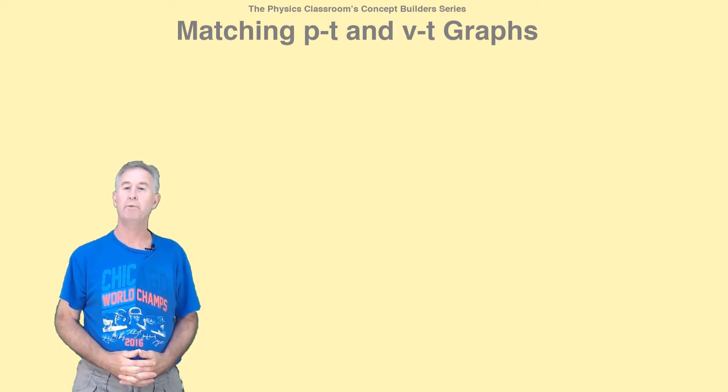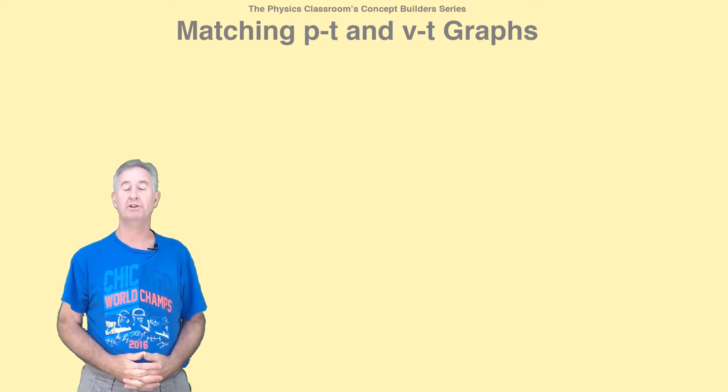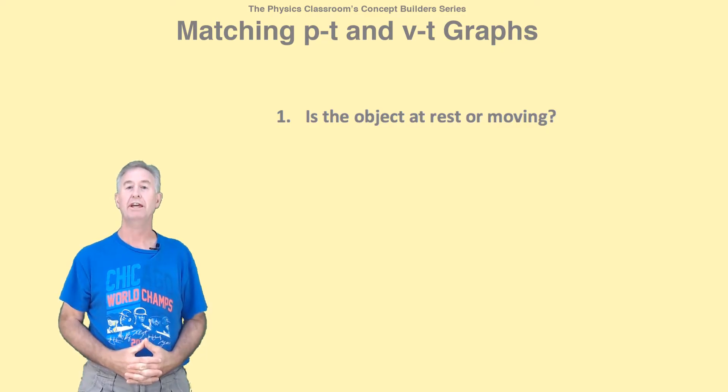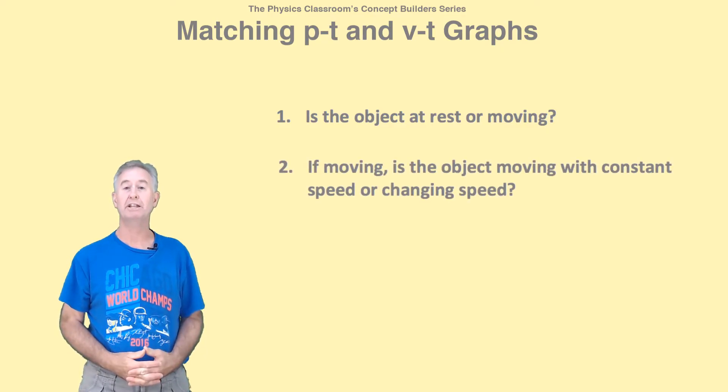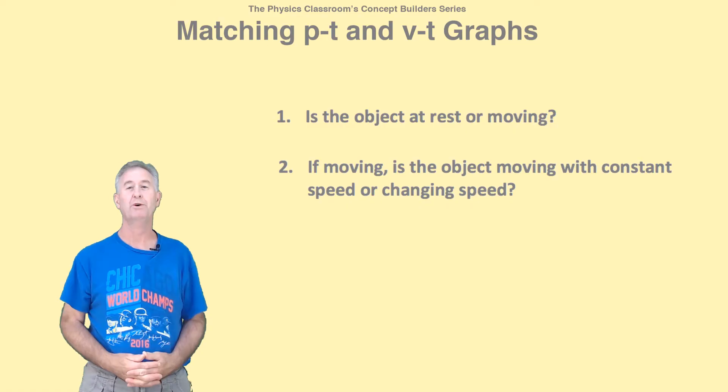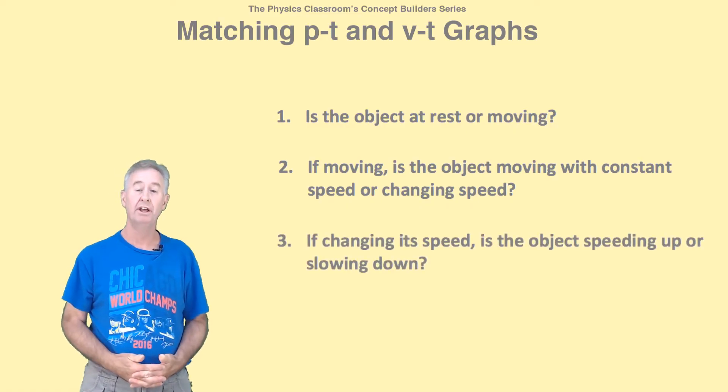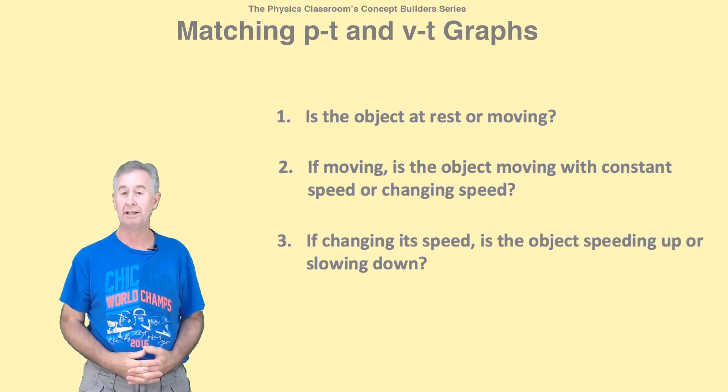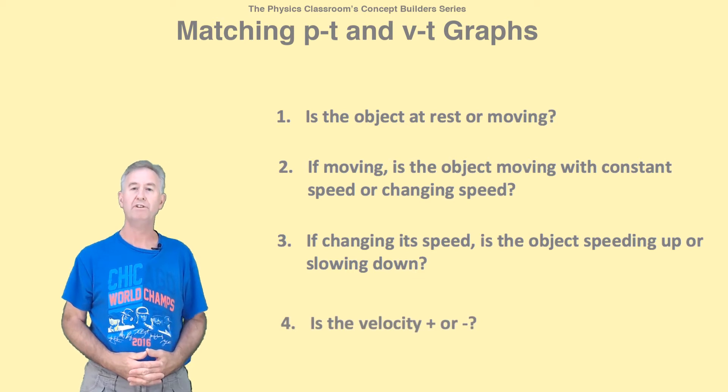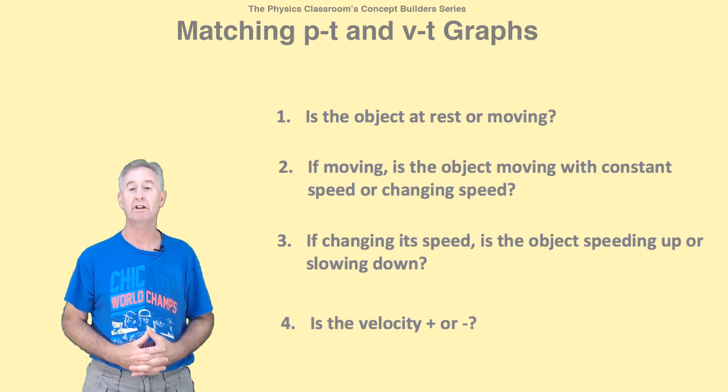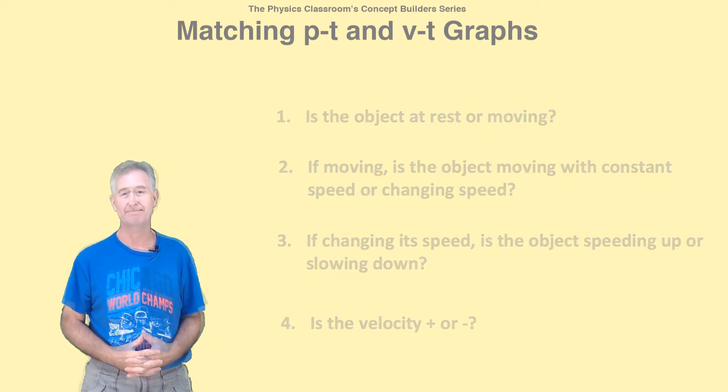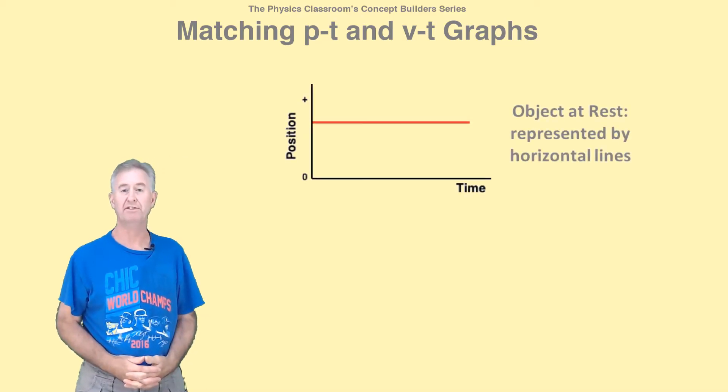When you interpret a motion graph, you want to learn the answers to four important questions. First, is the object at rest or moving? Second, if the object is moving, is it moving with constant speed or changing speed? Third, if it's moving with changing speed, is it speeding up or slowing down? And fourth, we often use a positive or negative sign to indicate the direction of a vector like velocity. You want to know, is the velocity positive or negative?